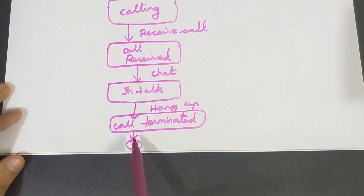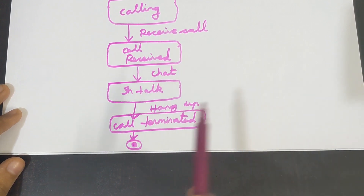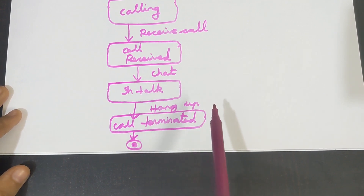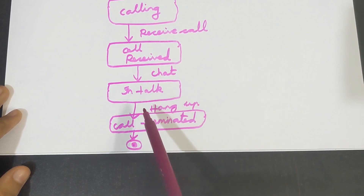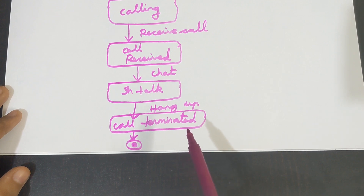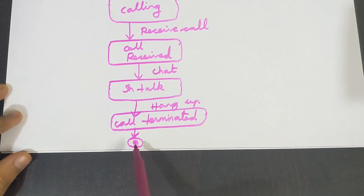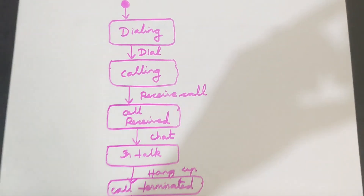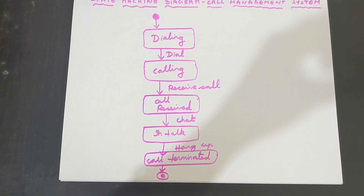From in-talk state, it won't directly change to 'call terminated' — the event 'hang up' needs to happen. Hang up means ending a phone call. Only when hang up takes place will the state change from in talk to call terminated. After having a conversation with the person, you terminate the call, and the process ends. Draw the stop symbol — a bigger circle with a smaller circle inside, colored in. This is the final diagram for the call management system.